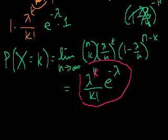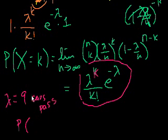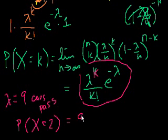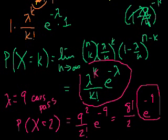Just so you know how to use this: suppose I'm a traffic engineer and I figure out that on average nine cars pass per hour. That's my lambda. I want to know the probability that exactly two cars pass in a given hour. That's equal to 9 squared over 2 factorial times e to the minus 9 power, which equals 81 over 2 times e to the minus 9. I'll let you work out that calculation. See you in the next video.